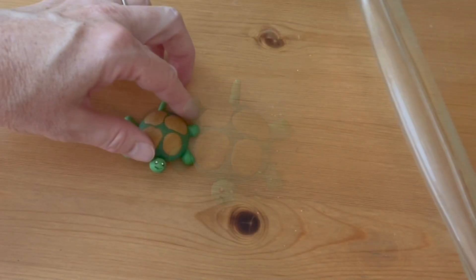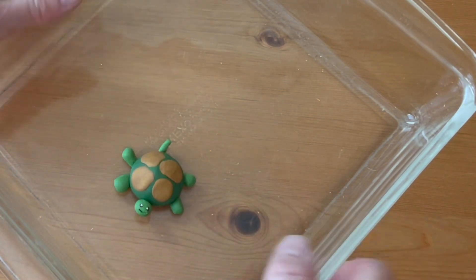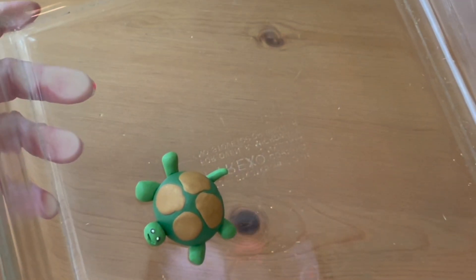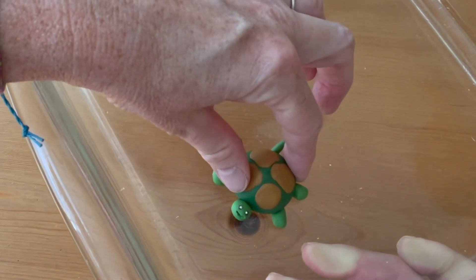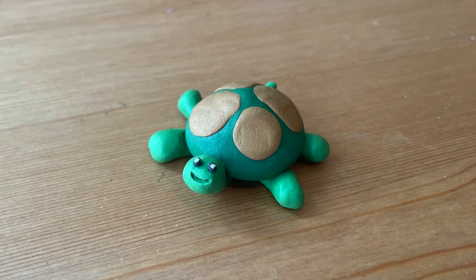Place the finished turtle in a non-metal baking dish either glass or ceramic. Bake it according to the clay manufacturer's instructions, 275 degrees Fahrenheit for about 20 minutes. When it's finished, let it cool, remove it from the pan, and you're finished.